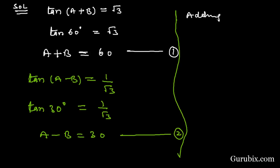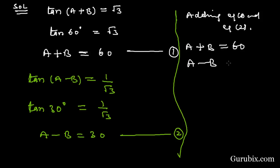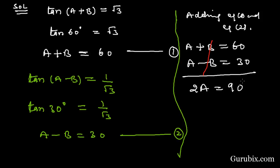Now, adding equation 1 and equation 2: a+b = 60° and a−b = 30°. Adding these, the +b and −b cancel out, and we have 2a = 90°. Therefore, a = 45°.